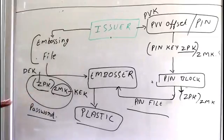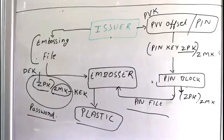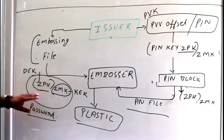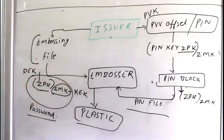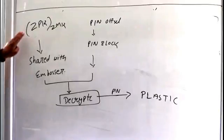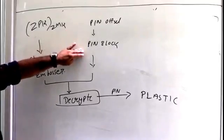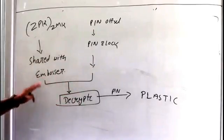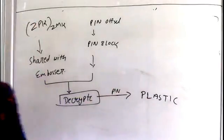The embosser must know this password. So what the issuing bank did is: they created their data, provided the next level of security by encrypting the data using keys. Now the embosser will first use the ZMK to get the ZPK. They also have the CMK because CMK also needs to be exchanged. Whatever is being shared with the vendor is a secure key or password — that password must be shared via a secure channel. Once the embosser has these keys, they decrypt the PIN file, retrieve the PIN block, and generate the plastic.